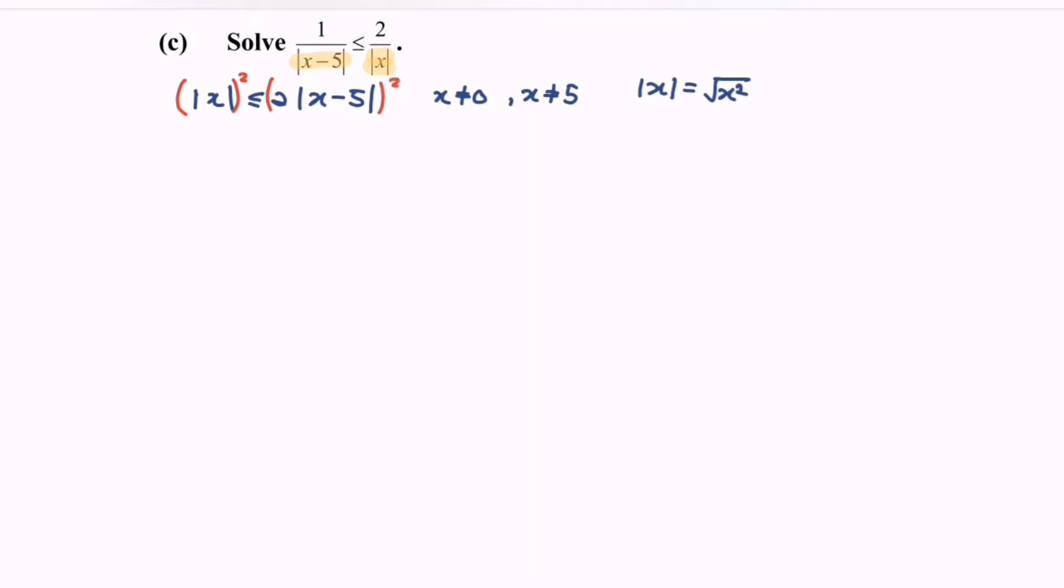And we will have x square less than or equal to 4 multiplied with x minus 5 square. So focus on the right-hand side. x square less than or equal to 4 multiplied with x square minus 10x plus 25. So we will have 4x square minus 40x plus 100 minus x square, and we will have greater or equal to 0.